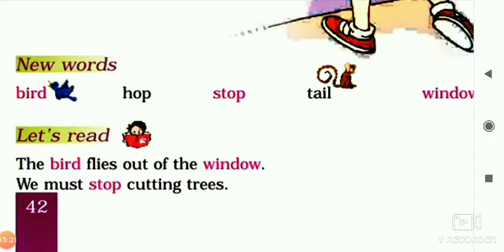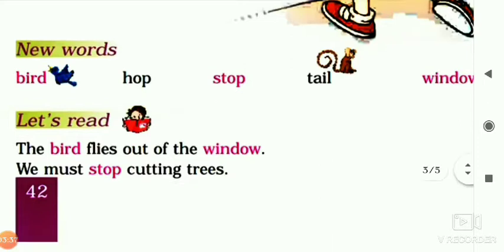The bird flies out of the window — chidiya khidki ke bahar ud gayi. We must stop cutting trees — hume pedo ko kaatne se rokna chahiye.